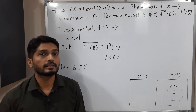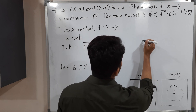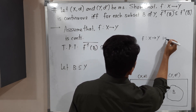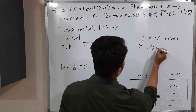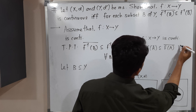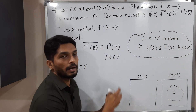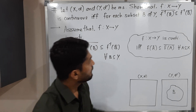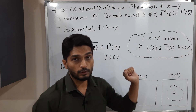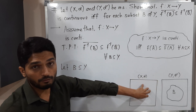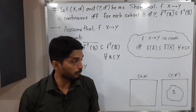I am going to use a result we already proved in a previous video. That result is: f from X to Y is continuous if and only if f(Ā) ⊆ f(A)̄, and this is true for all subsets A of X. I will use this result to prove the current statement. However, this result applies to subsets of X, and right now we have a subset B of Y.